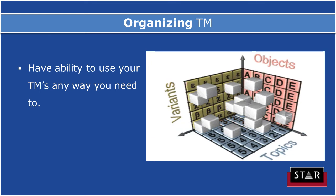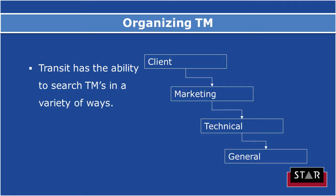When organizing your TM, the system we use has the ability to organize your translation memory in multiple ways, which is quite useful for different types of translation. For example, we could have a client TM with their marketing text in one group, a technical translation memory, and then a general translation memory. When translating a project for a customer, we can say: look at the marketing text first, technical text second, and if you still can't find it, look at the general text.